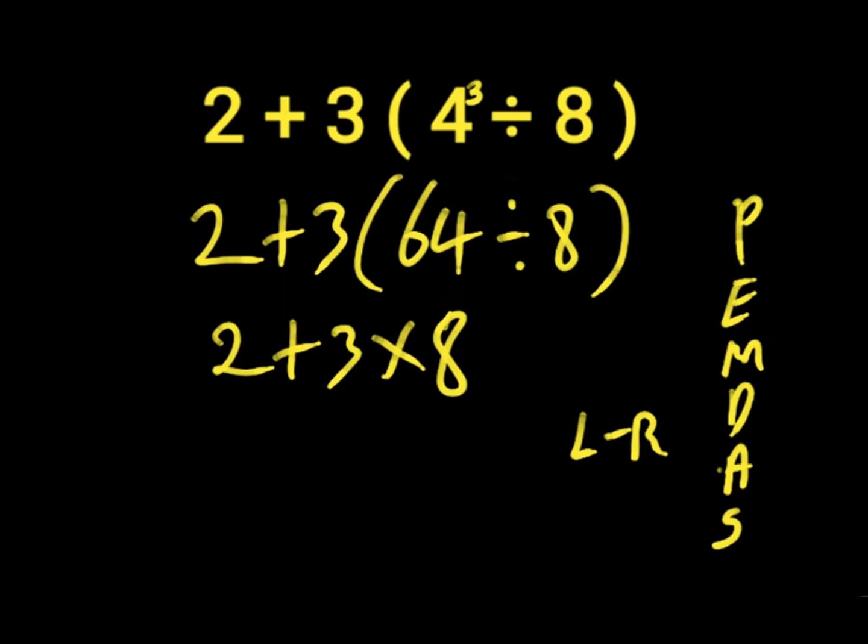So 3 times 8 will give us 24. Then we have 2 plus 24. 2 plus 24 will give us 26.